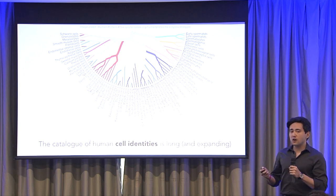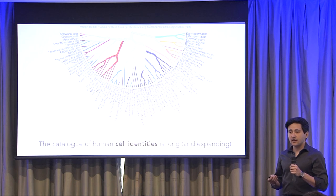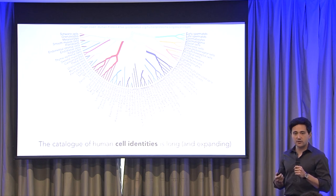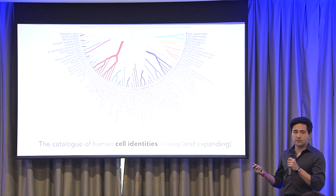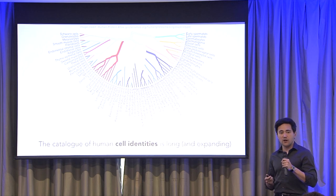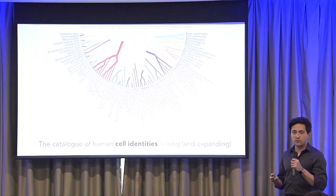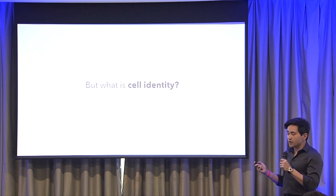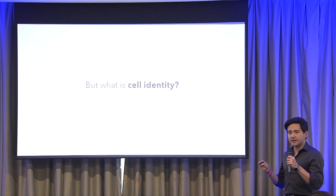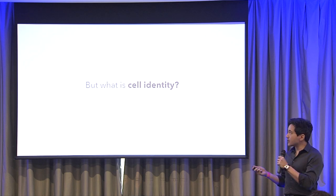The catalog of human cell identities or cell types — this could be the cells that make your eyes function, the cells that produce mucus in your lungs, the cells that help you digest food in your stomach. That list of functional cell types or cell identities is long and ever-growing. As our technologies are improving, we're capable of exploring cell identities in ways that we haven't before. But what exactly is cell identity? How do we define a discrete cell identity or two different cell types?